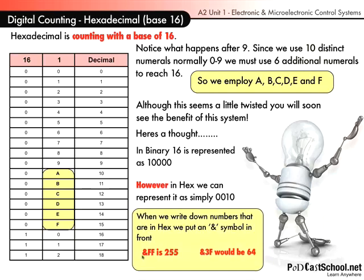Here's a quick example. Whenever we're writing hex we always use an ampersand or and symbol. So &FF would be 255 in decimal, and &3F would be 64. Don't worry if you don't understand where those numbers are coming from — I'm going to show you now how to convert between binary and hexadecimal.